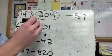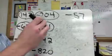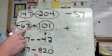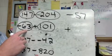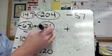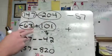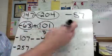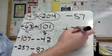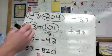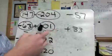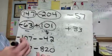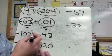Second practice problem: this one is already formatted correctly. We have 63 negatives and 101 positives — more positives than negatives, so the answer is going to be positive. Since we have both signs there will be canceling. After subtracting, we have 33 more positives left over, so the answer is positive 33.